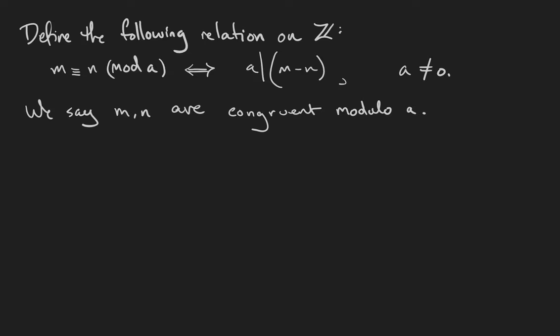In this video, we're going to talk about a special equivalence relation on the set of integers. Fix a non-zero integer a, and we're going to say that m is related to n if and only if a divides the difference of m and n. If that's the case, we're going to say m and n are congruent modulo a.